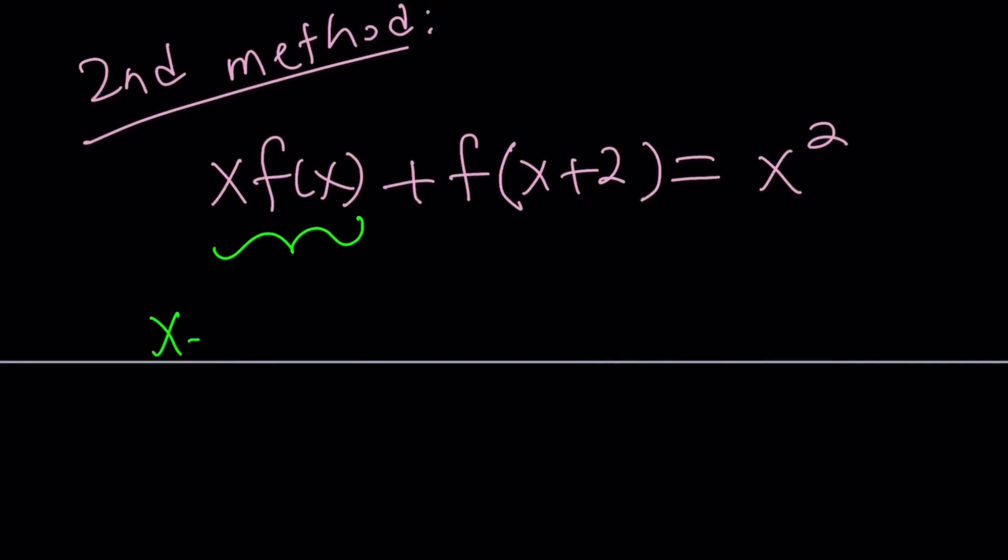So if I had x minus 3 multiplied by f of x, and then blah blah blah, then replacing x with 3 would be the right move. Make sense?